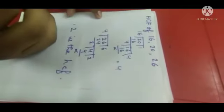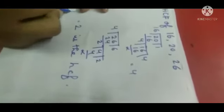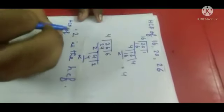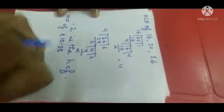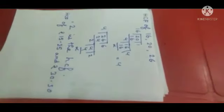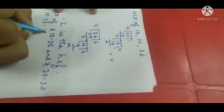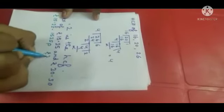I am giving you another example of the division method. We have to find the HCF of rupees 15.25 and rupees 30.50. To find the HCF of these 2 numbers, first we have to convert them into Paisa. I am converting it now: rupees 15.25 becomes 1525 Paisa, and rupees 30.50 becomes 3050 Paisa. Now we will do HCF again using the division method.